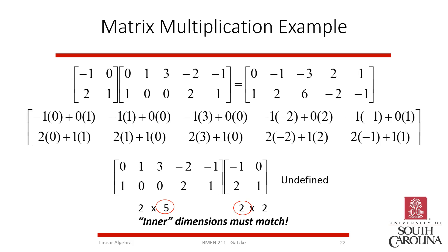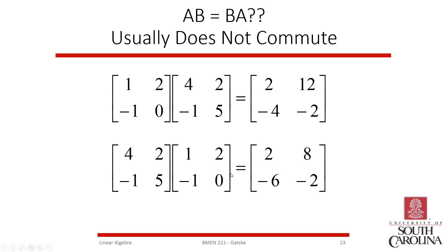Here's a larger example: a 2-by-2 times a 2-by-5. We do the dot product of rows with columns to build each column of the output matrix. Each element is a dot product of a row and a column. We start with a 2-by-2 and a 2-by-5, ending up with a 2-by-5 result. Note that a 2-by-5 times a 2-by-2 cannot be done because the row has five elements and the column has only two — inner dimensions don't match.